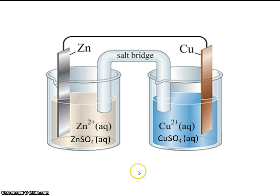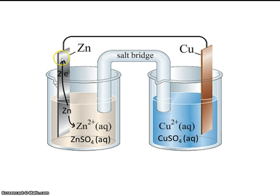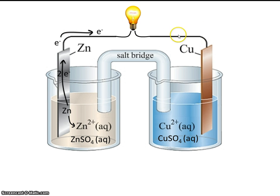Just like before, electrons will transfer from zinc over to copper ion. Here's a zinc atom — the zinc is going to get oxidized and lose electrons. As it loses electrons, the zinc will turn into zinc plus 2, and the two electrons that it loses will travel through the electrode and through the wire over to the copper side, because there's a lower potential energy there. As electrons travel from high potential energy to low potential energy, we can use that difference in energy to light a light bulb.